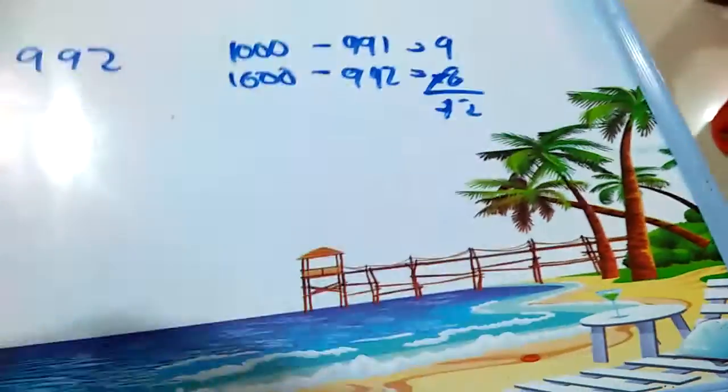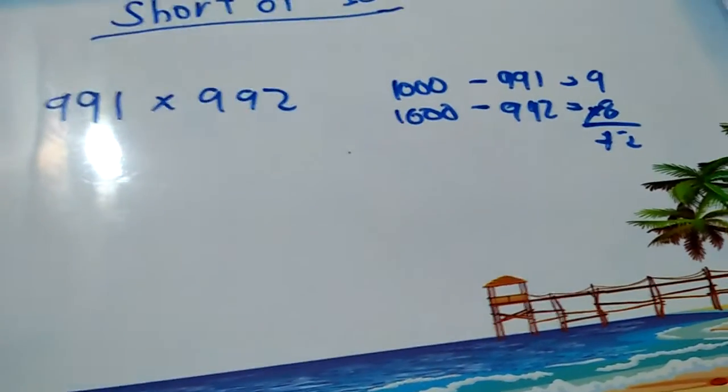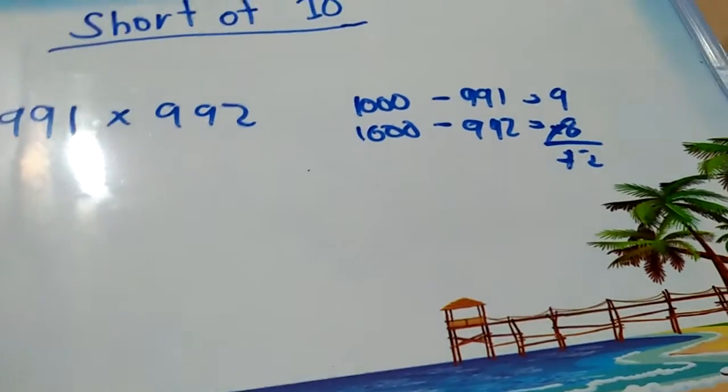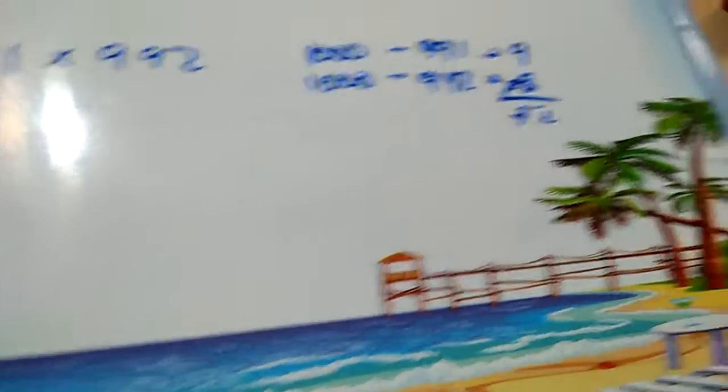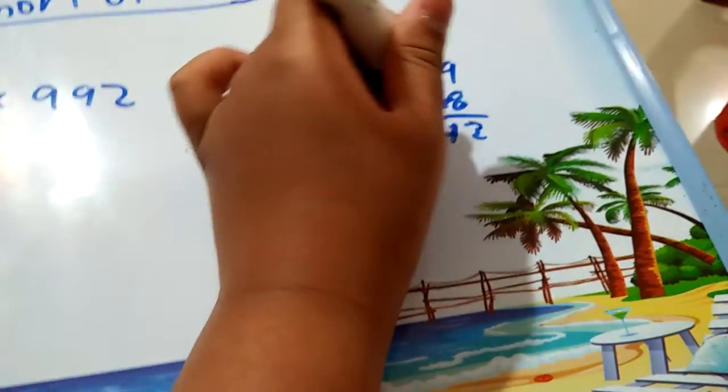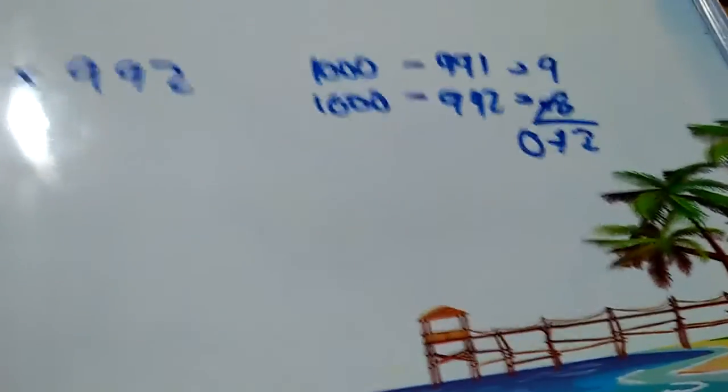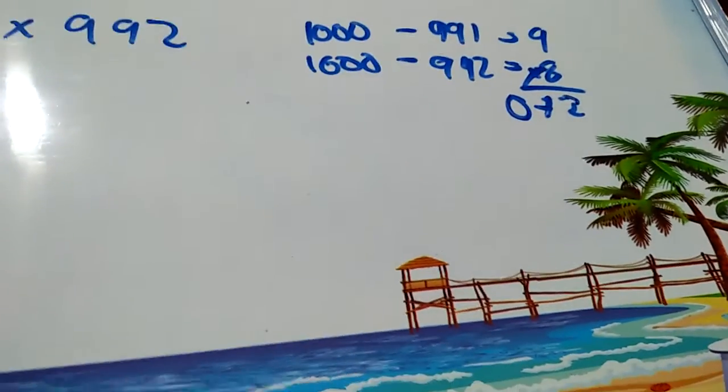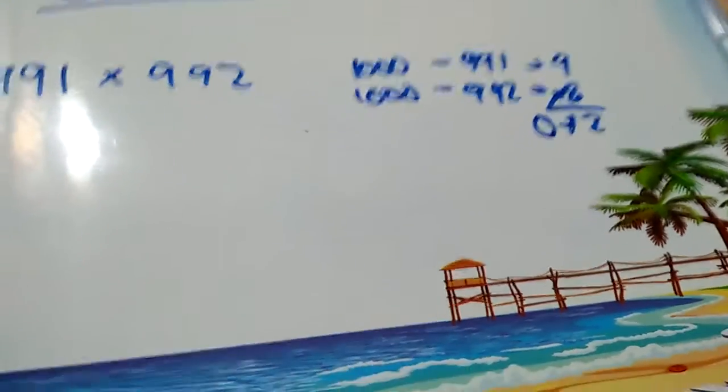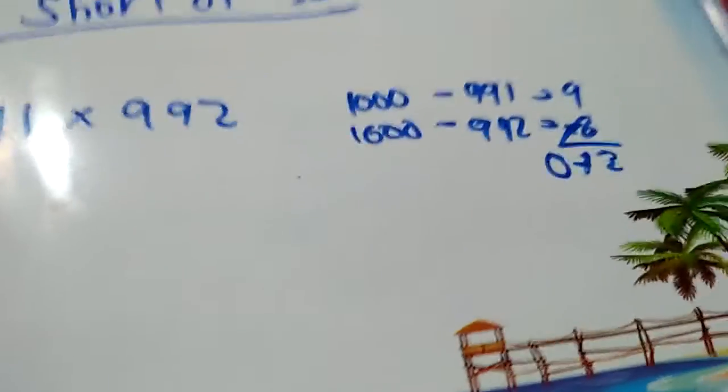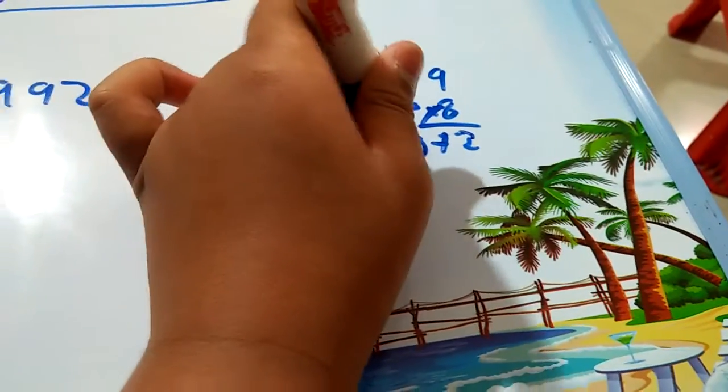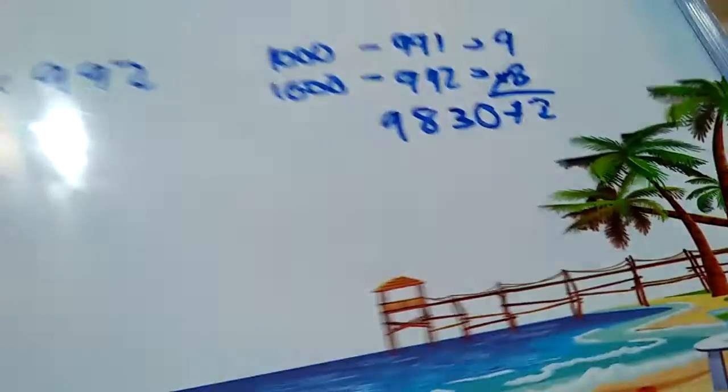Multiply both of them and you get 72. Then place a 0 in between, then 9 times 8 is 72 plus 9 is 81, plus 8 is 83, and then put a 9 over here so you get the product.